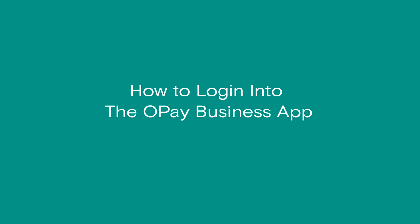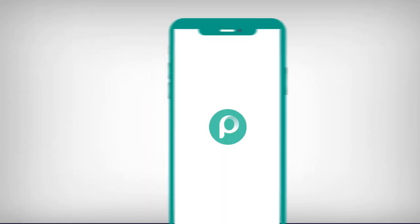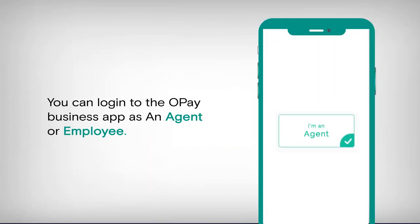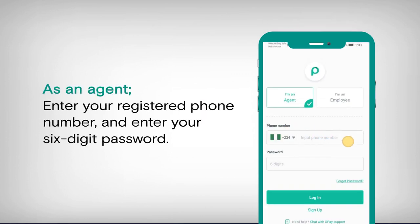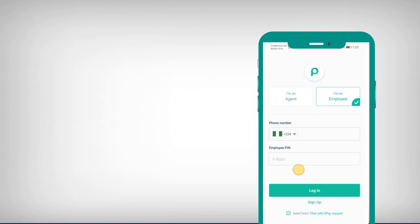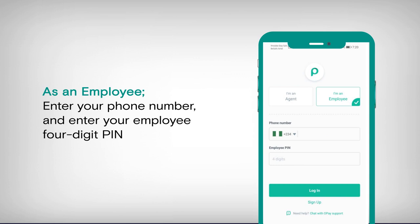How to log in to the Opay business app. You can log into the Opay business app as an agent or employee. As an agent, enter your registered phone number and enter your six-digit password. As an employee, enter your phone number and enter your employee four-digit PIN.